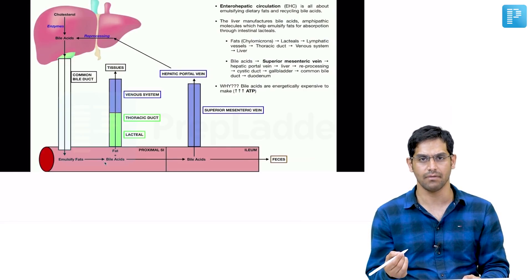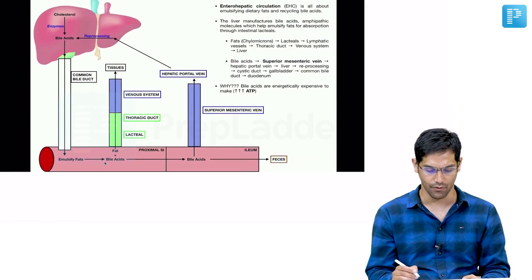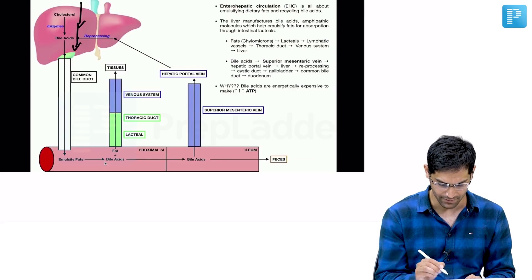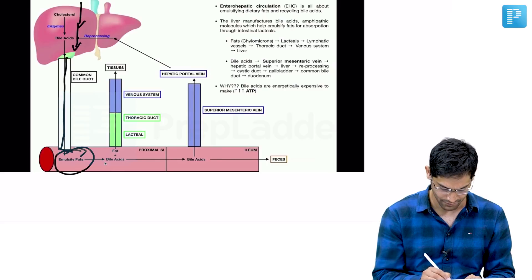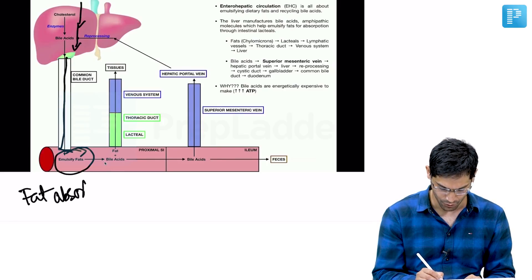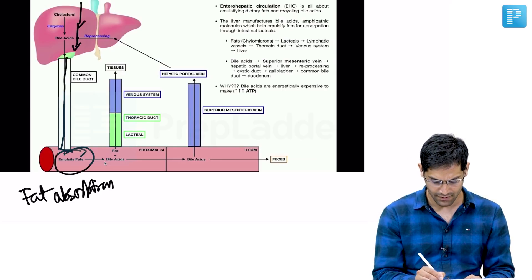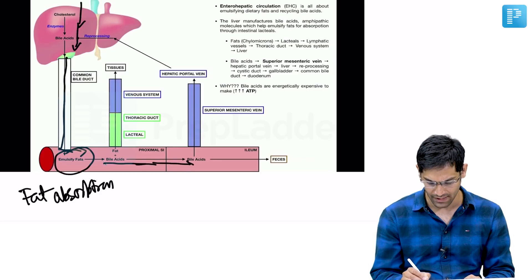Enterohepatic circulation is of prime importance to conserve as much bile acid as possible. Cholesterol entering the liver forms bile acids, which are secreted and help in fat absorption by emulsifying fat. They are of utmost importance in fat absorption.